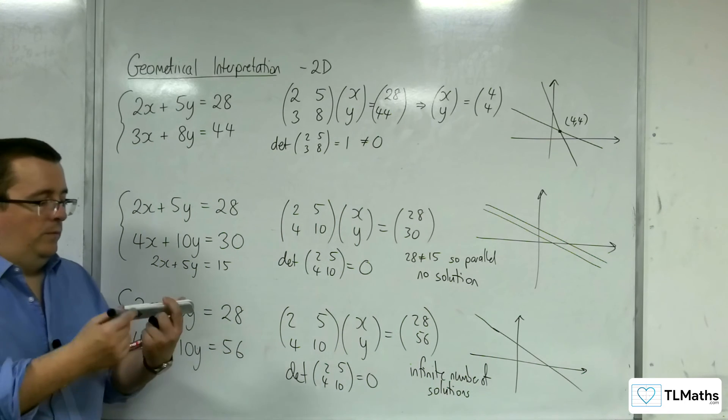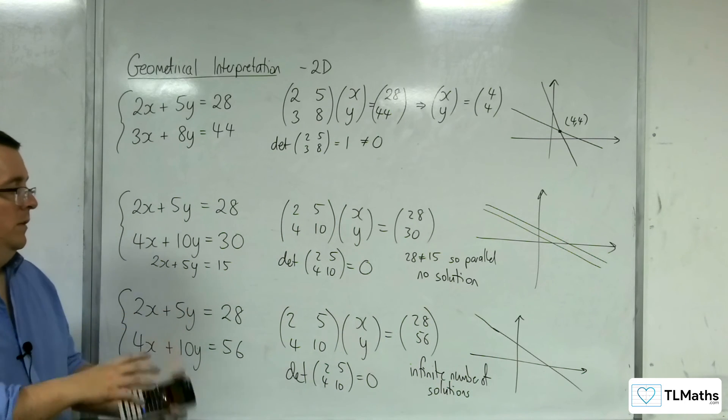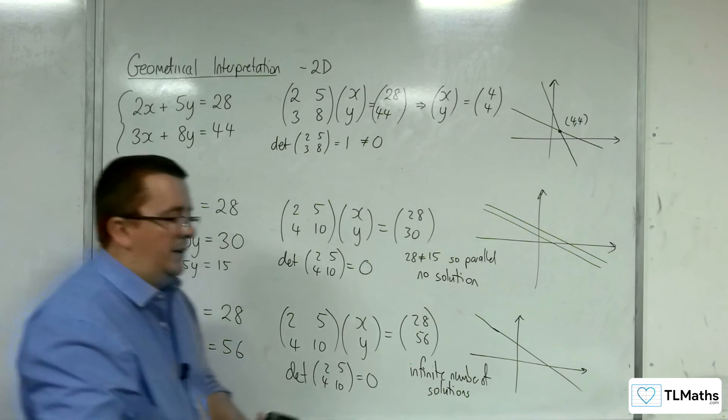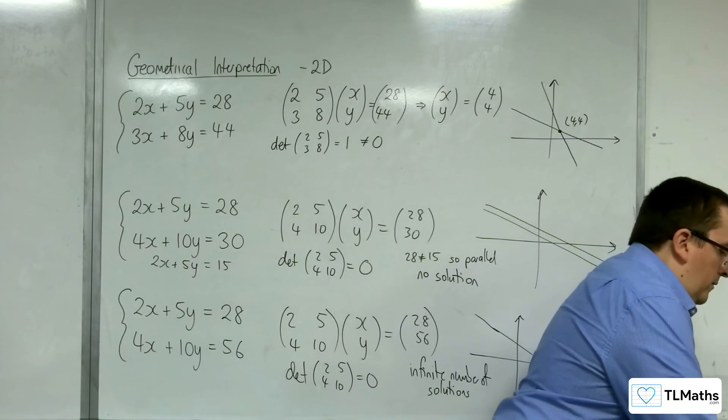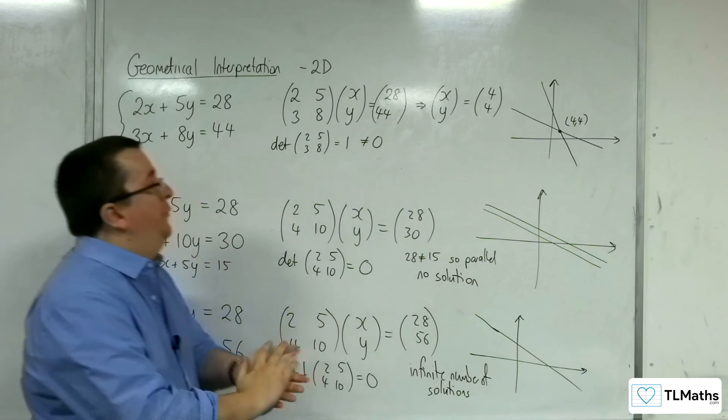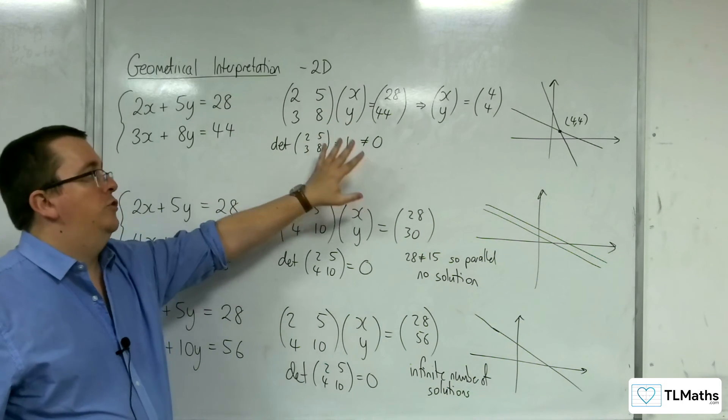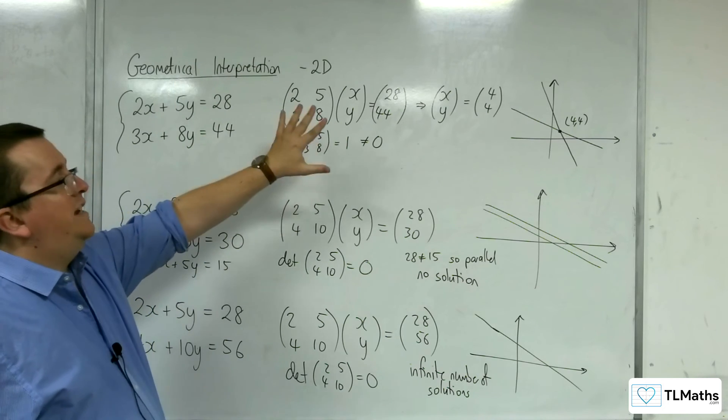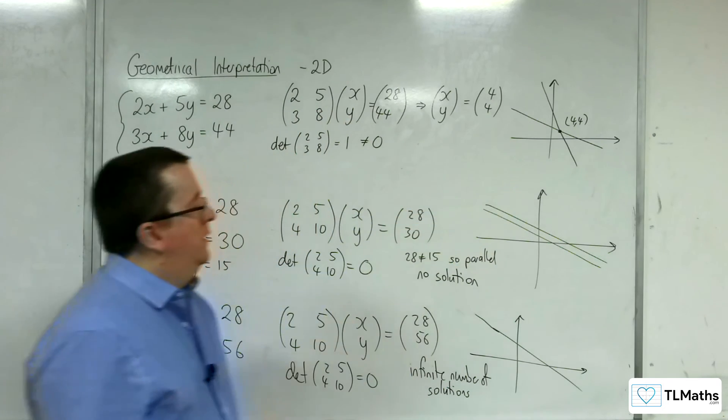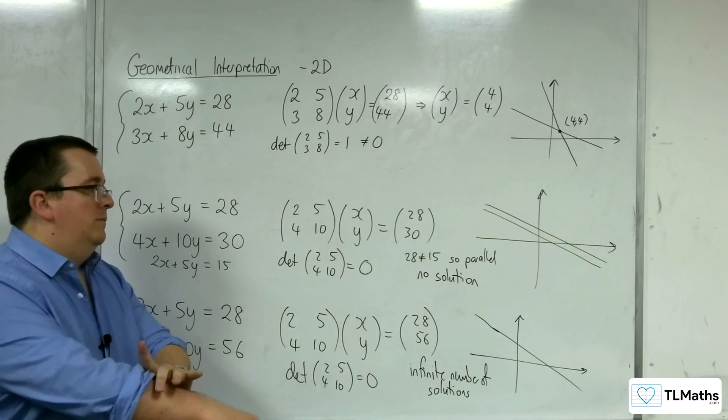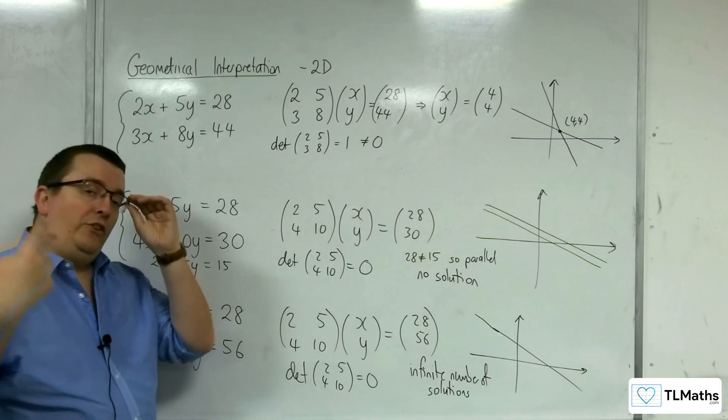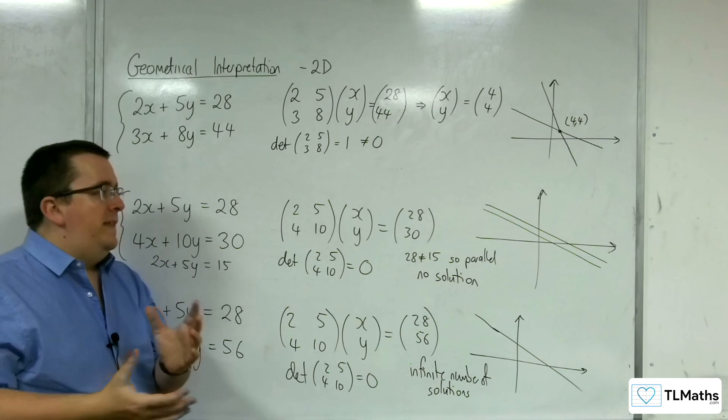Whereas this had no solutions. So the determinant being 0 didn't tell us enough. If the determinant is non-zero, then we know we've got a distinct set of solutions. Or, sorry, a distinct point of intersection. If the determinant is 0, then we need to do a little bit more work to figure out which type of problem it is.